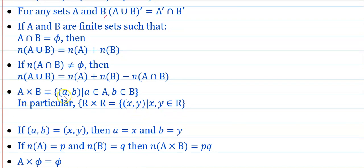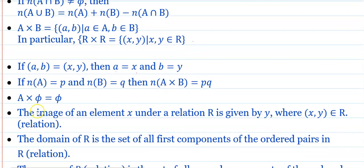In particular, R cross R equals the set of (x, y) such that x and y belong to the set of real numbers. If ordered pair (a, b) equals ordered pair (x, y), then clearly a equals x and b equals y. If n(A) equals p and n(B) equals q, then n(A cross B) equals p into q.